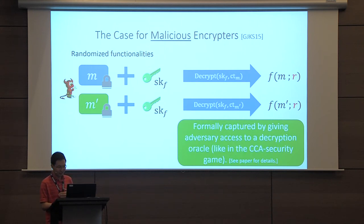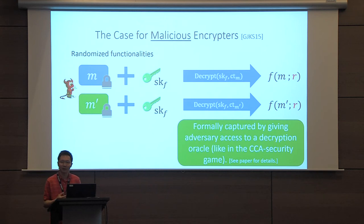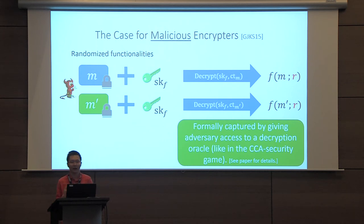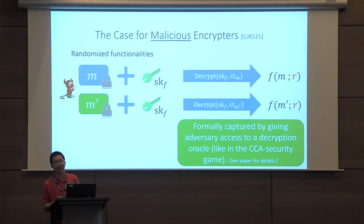We capture this formally by giving the adversary access to a decryption oracle in the security reduction, just as we capture malicious encryptors in a CCA setting. We believe this robustness against malicious encryptors is the correct notion of security when looking at functional encryption in a randomized setting.